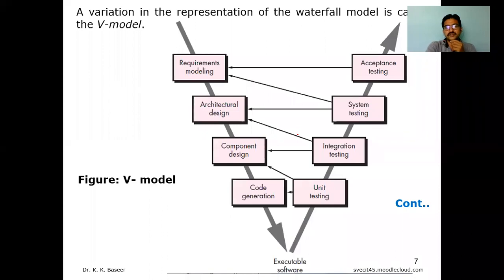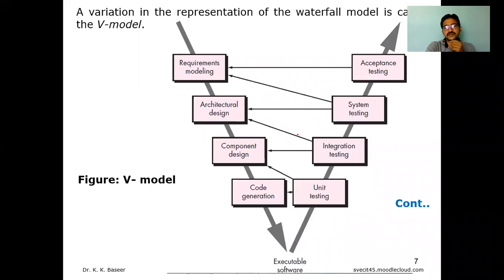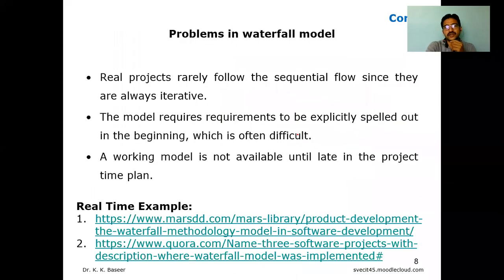We also discussed the V-model. For each phase we apply some sort of testing. For requirement modeling we apply acceptance testing; for architectural design we apply system testing; for component design we apply integration testing; and for code generation we apply unit testing. This sort of testing will be covered in detail in the fourth unit.